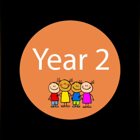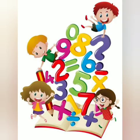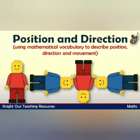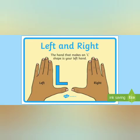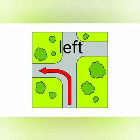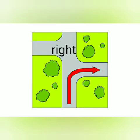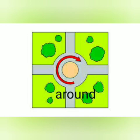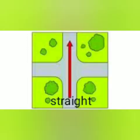Welcome back to our maths lesson, Year 2. Today we're going to carry on looking at position and direction. I hope you remembered what we did in last lesson. Last lesson we looked at our left and right. Remember, if we put our hands in front of us, our left hand makes the letter L for left. Our vocabulary was left, right, around and straight.